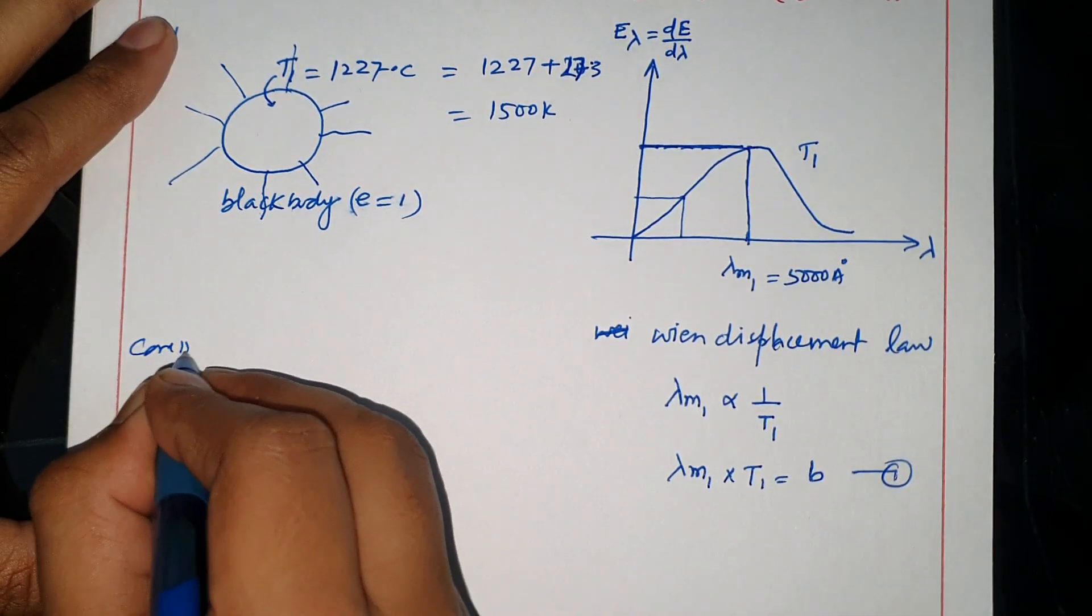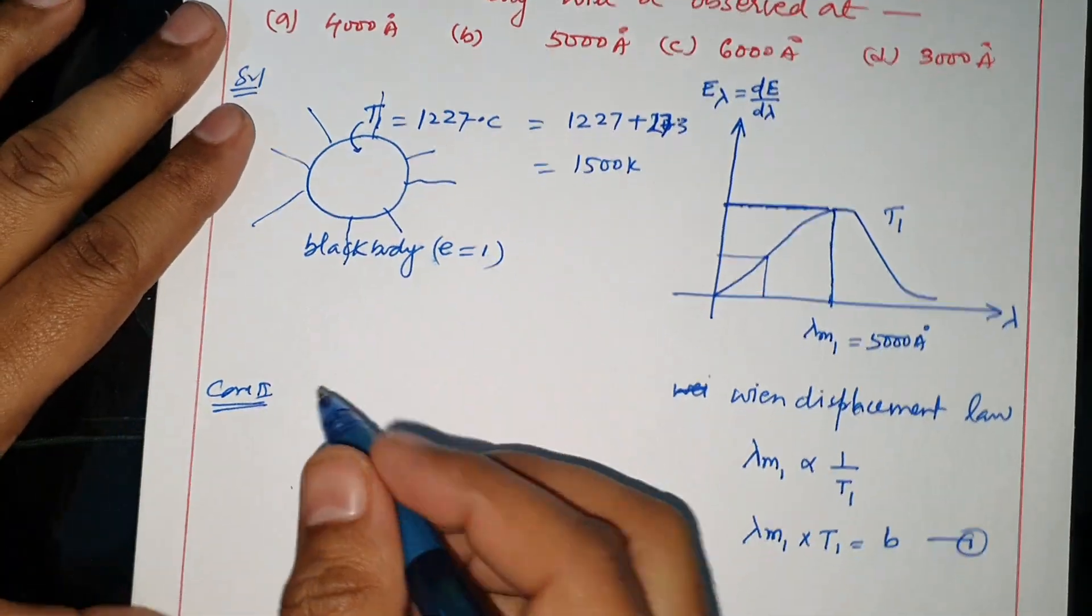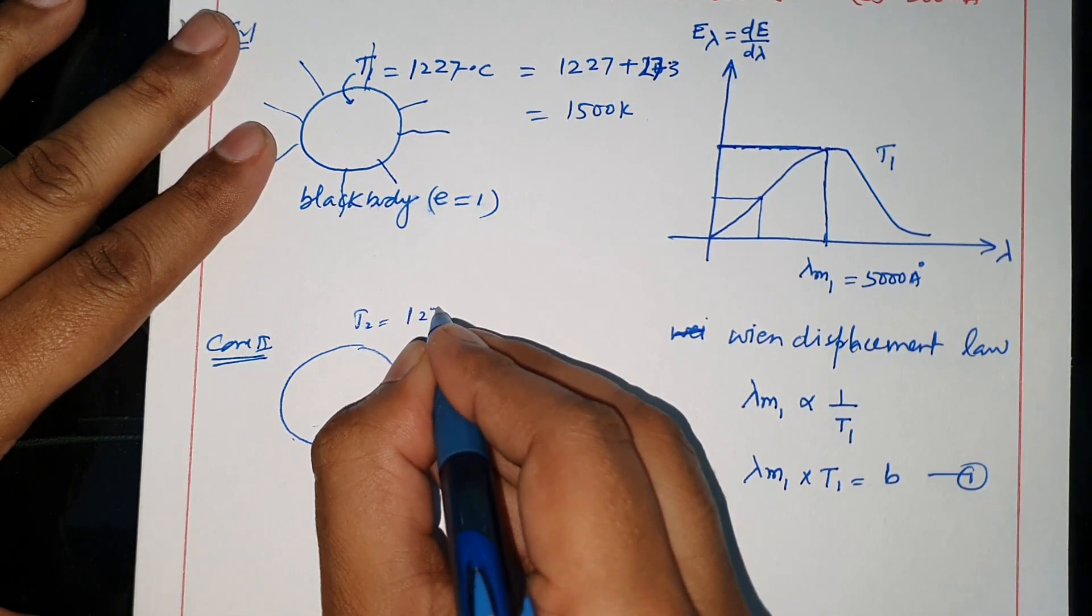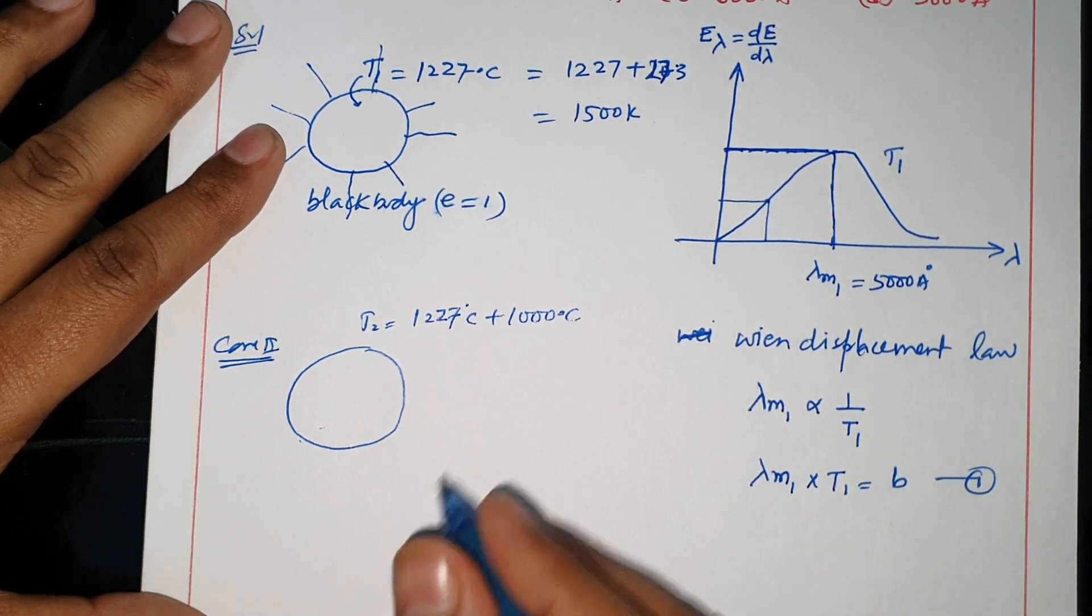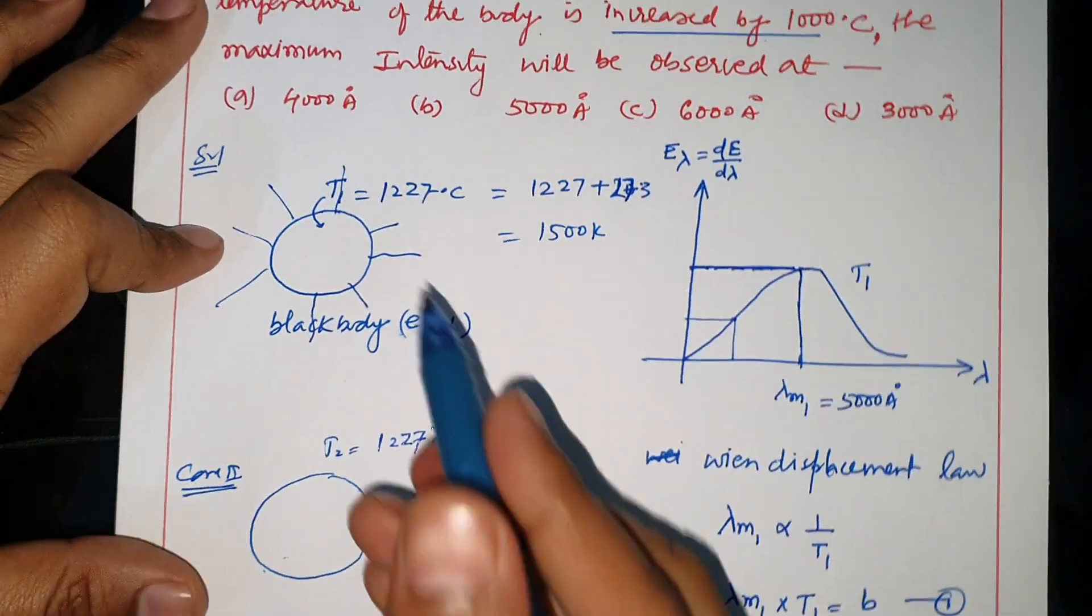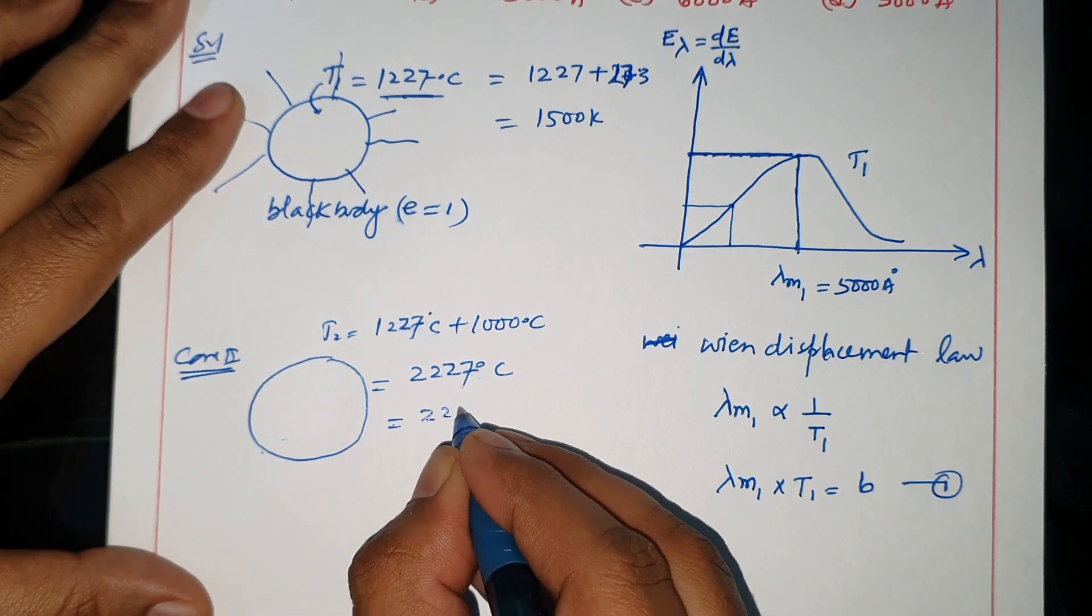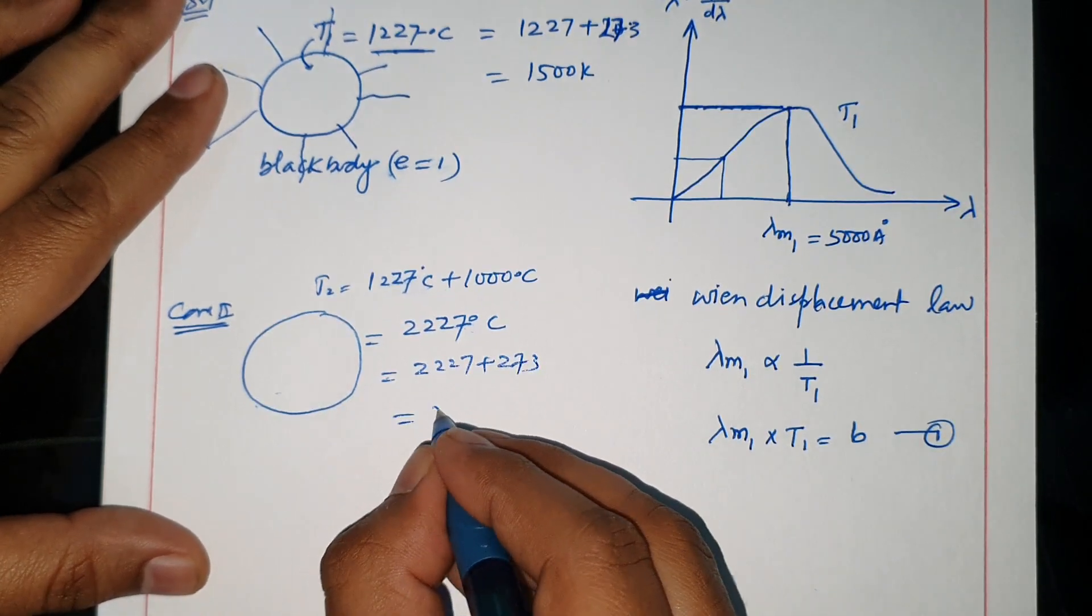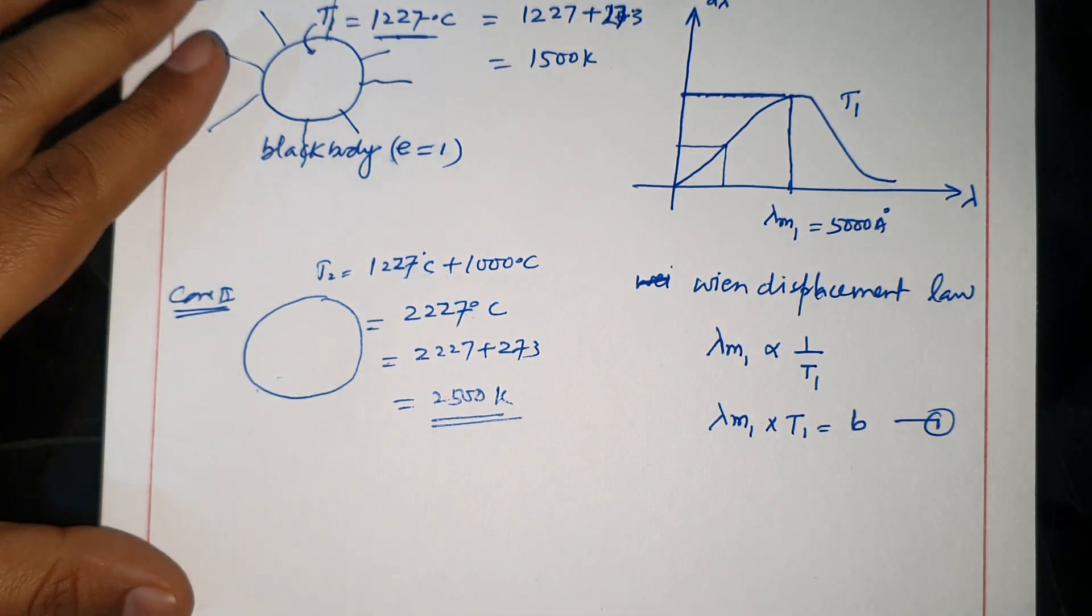If we increase the body temperature by 1000 degree Celsius, the body is the same but temperature T2 changes. The first temperature was 1227 degree Celsius, we add 1000 degree Celsius to get 2227 degree Celsius. Converting to Kelvin: 2227 plus 273 equals 2500 Kelvin.